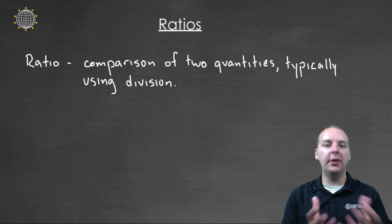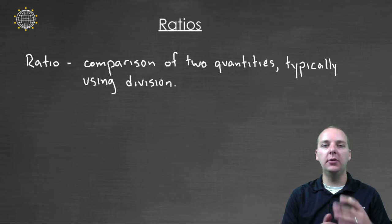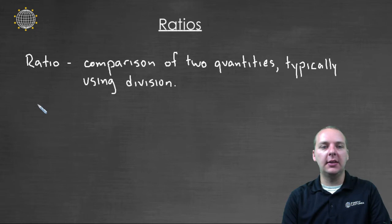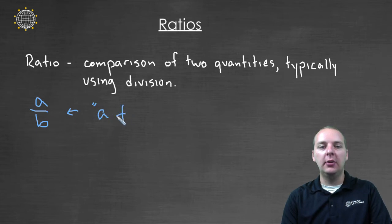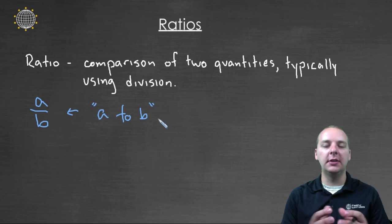A ratio is a comparison of two quantities, and typically this comparison is made using division. So the way we write a ratio is like this, we have A compared to B. And in English, the way we say this, and the way we write this, is this is expressed as the ratio A to B. And this just gives a sense, or a comparison of how A relates to B.